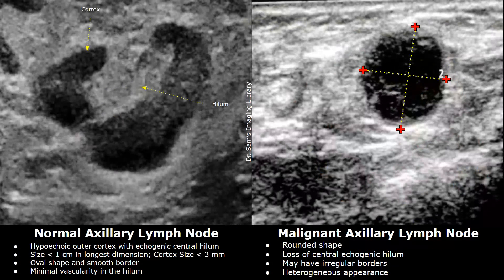A malignant axillary lymph node is associated with cancer. It will have a rounded shape — it loses its usual oval shape and appears more rounded. Another main feature is the loss of the central echogenic hilum; we do not see the central bright fatty hilum in a malignant lymph node. Overall it will have a heterogeneous appearance with mixed echoes.